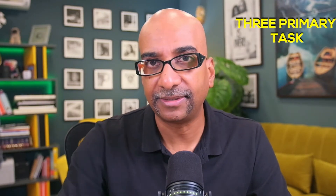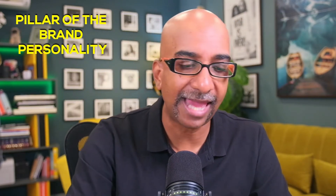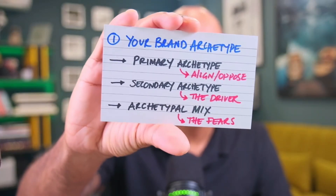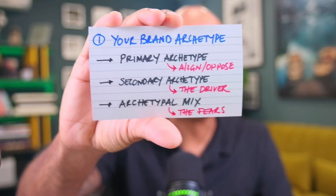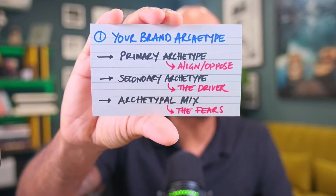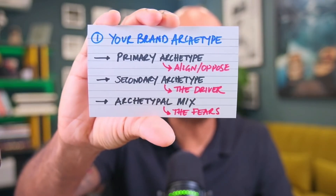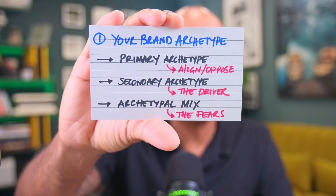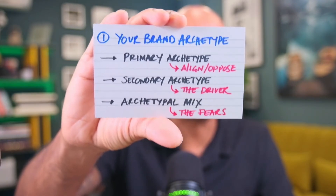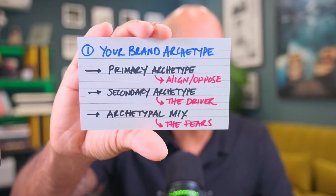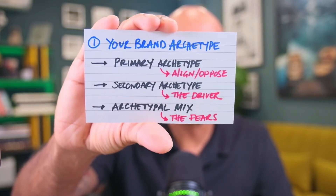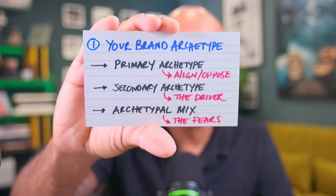The three primary tasks within the brand personality pillar. The first one is your brand archetype, and you need to figure that out by asking three questions: What is my primary archetype? What is the secondary archetype? And what is the archetypal mix? The three questions seem similar, but archetypes is a very deep topic.